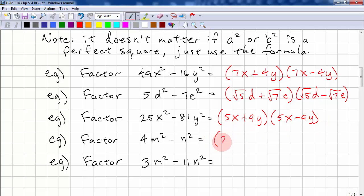Square root of 4 is 2m plus n, 2m minus n. Not a perfect square, so we use square root. m plus, not a perfect square again, square root 11, n. Square root 3, m minus square root 11, n. Now, when you're doing the square root sign, make sure it's only for the number and not for the variable.